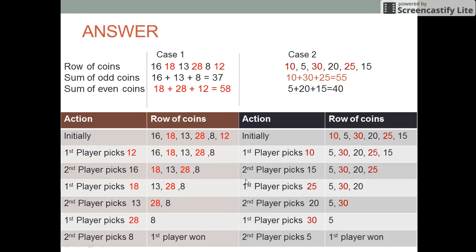Let us see one more case. We again find the sum of the odd numbered coins, 10 plus 30 plus 25 which is 55, and the even numbered coins, that is 5 plus 20 plus 15, that is 40.